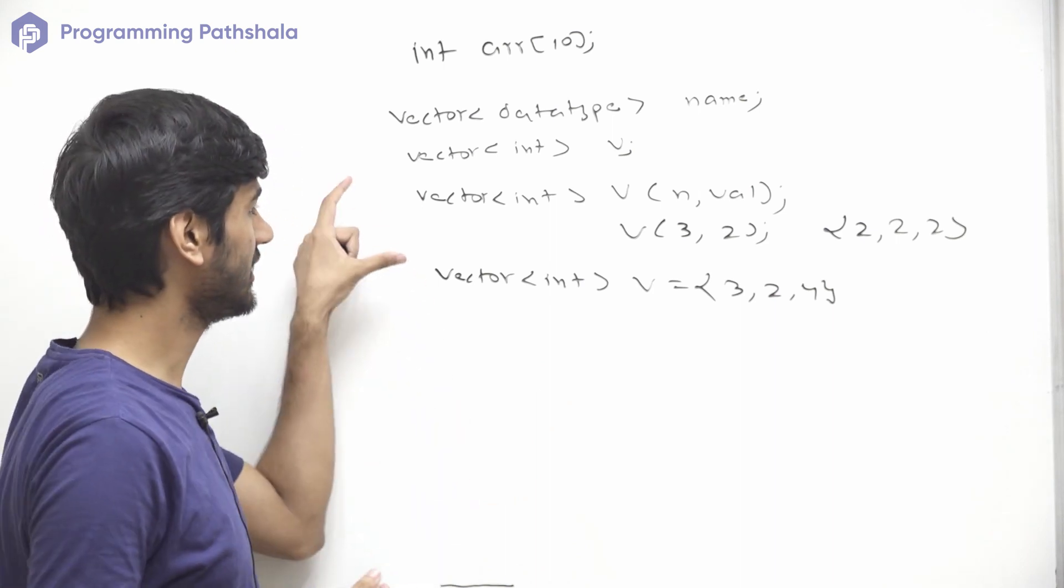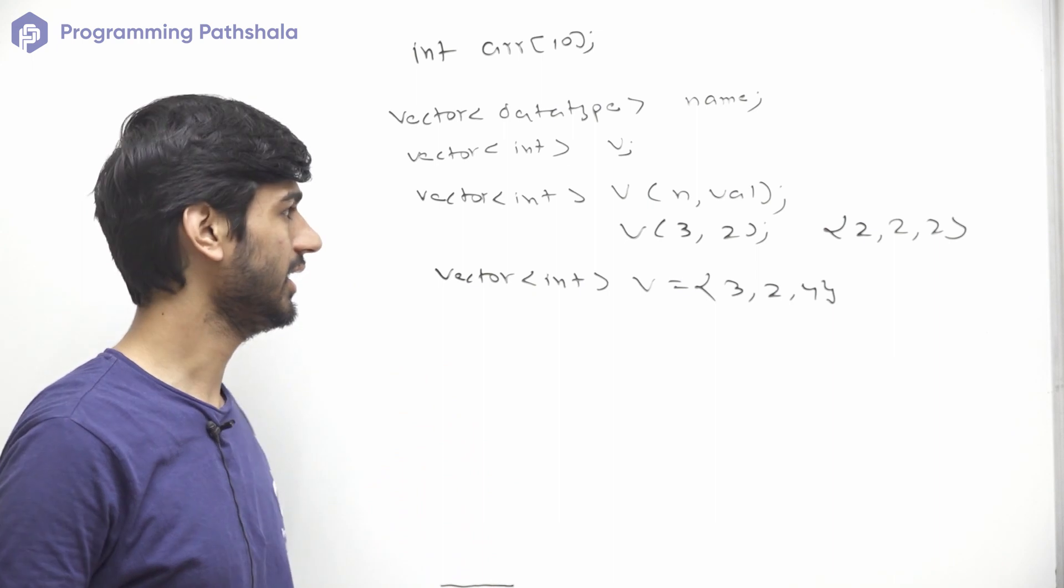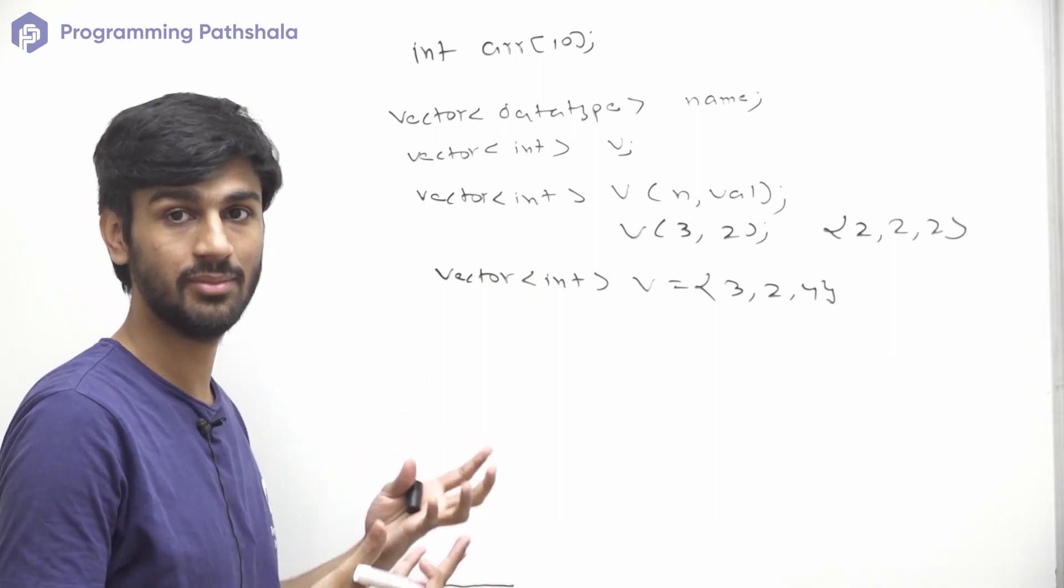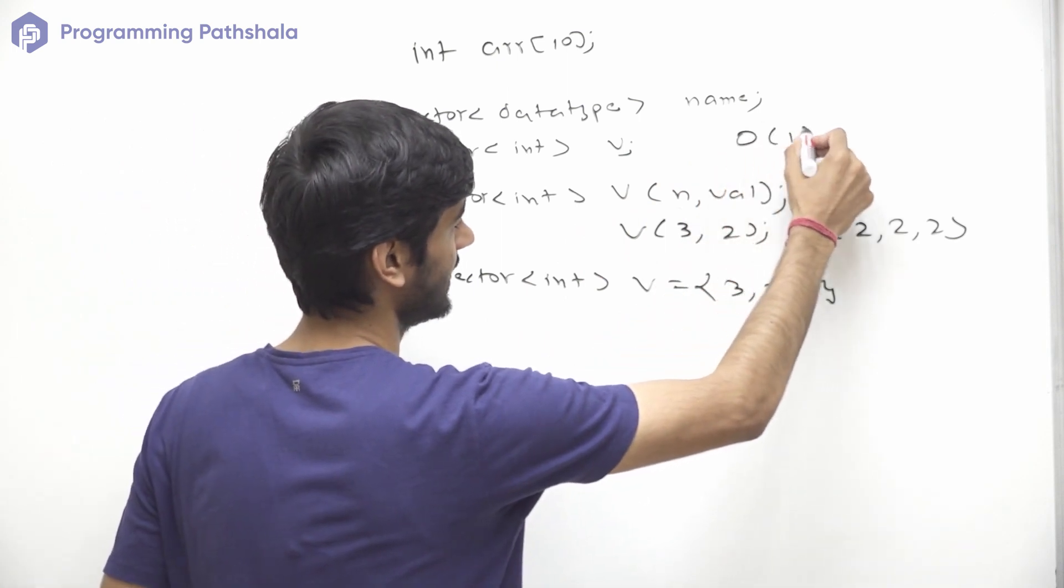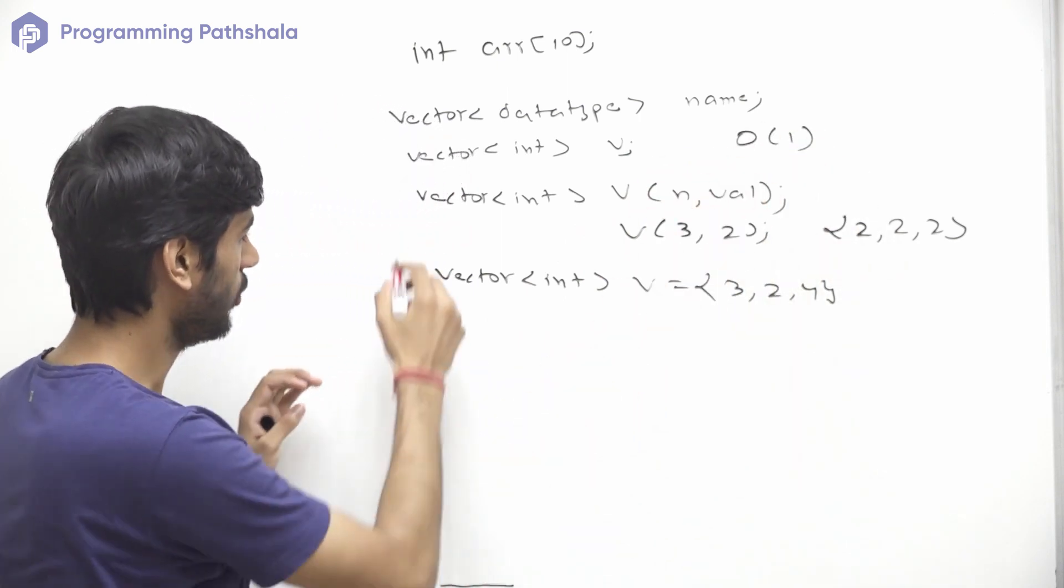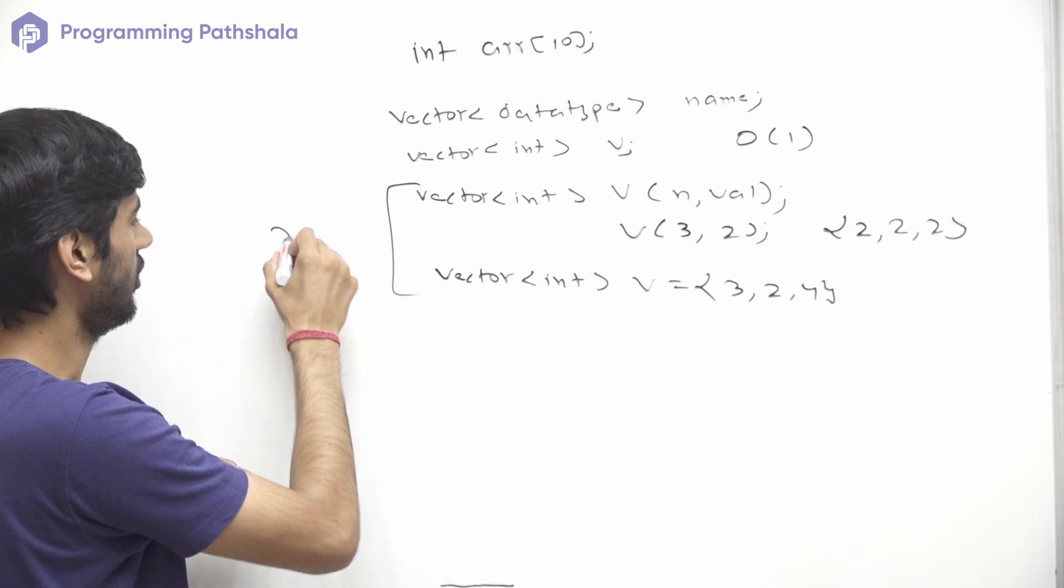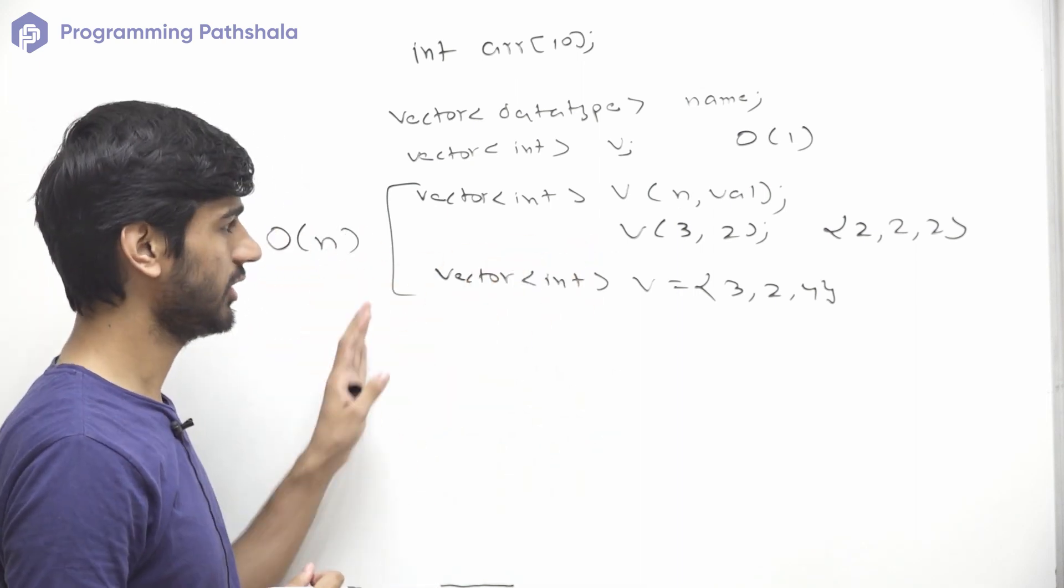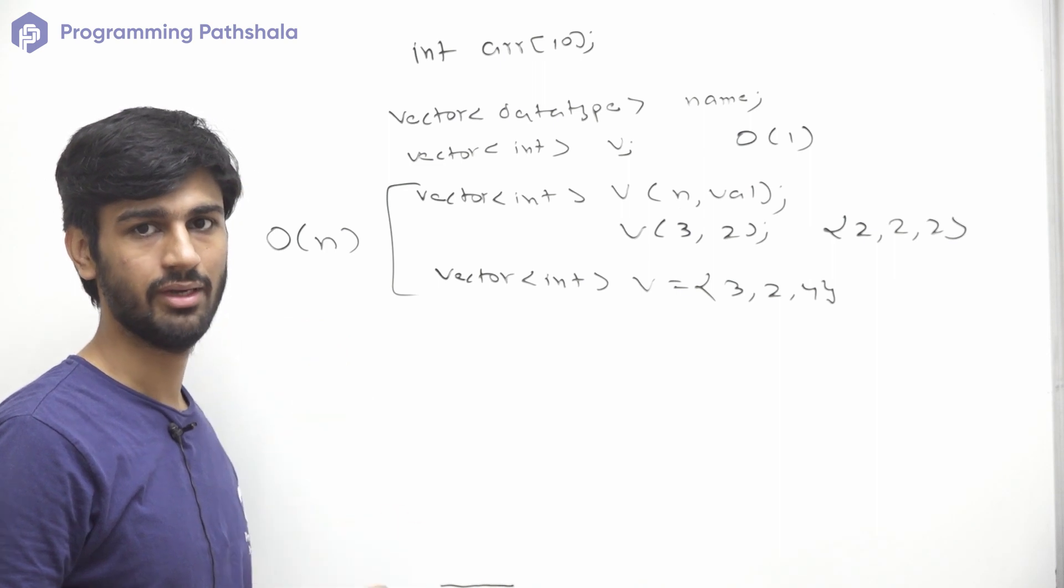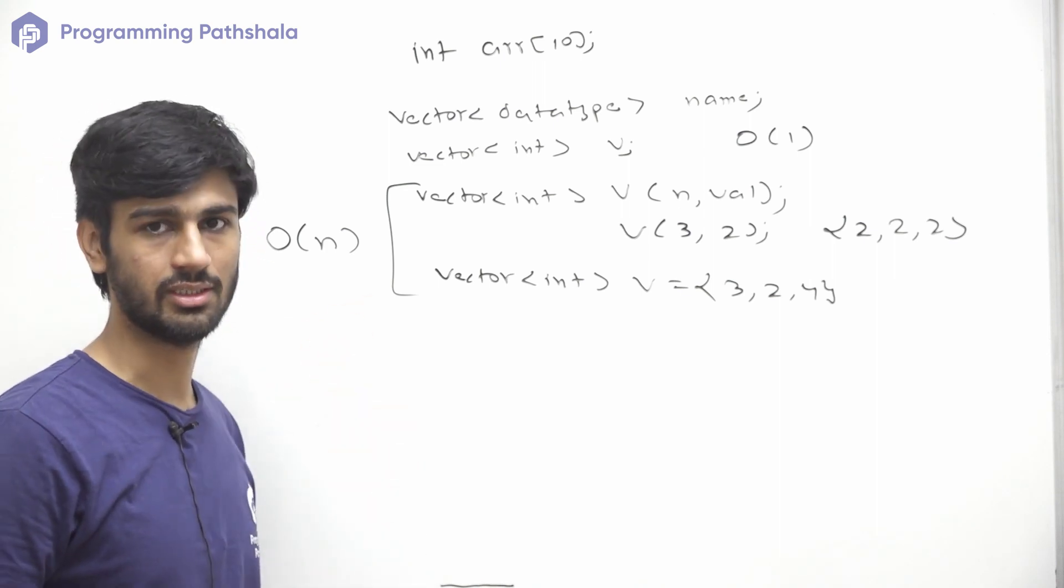Now there are more constructors but these are the three mostly used constructors. Now if we just talk about how much time they take, we can say that it will be order of 1, it will just take constant time, and both of these two constructors will take order of n where n is the size of the vector. So you need to have this in mind while using one of these constructors.